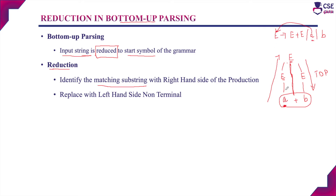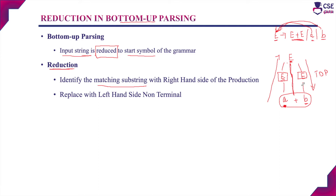The substring 'a' will be replaced with the left-hand side variable E. In the next step, for substring 'b', we identify the matching right-hand side production, and replace it with the left-hand side variable E. Then we identify the matching substring E plus E, which matches the production E derives E plus E. This matching substring is replaced with the left-hand side variable, reaching the start symbol of the grammar. Reduction is identifying a matching substring on the right-hand side of a production and replacing it with the left-hand side variable.